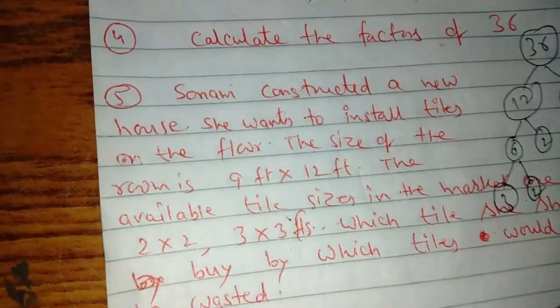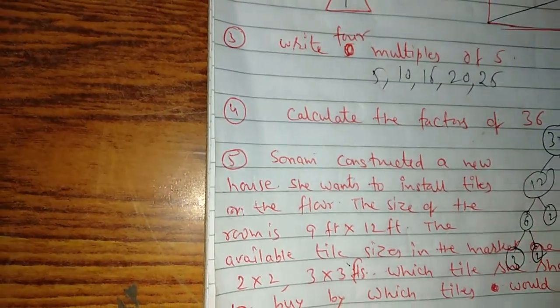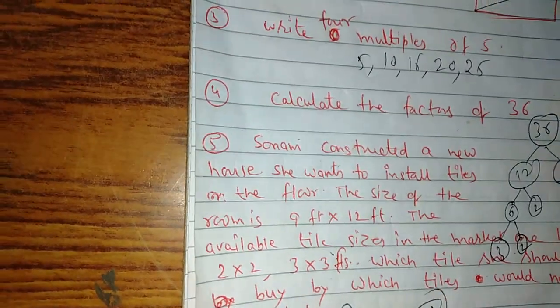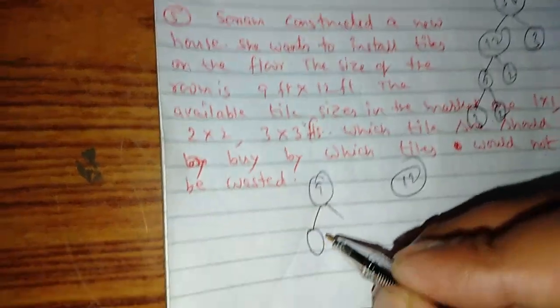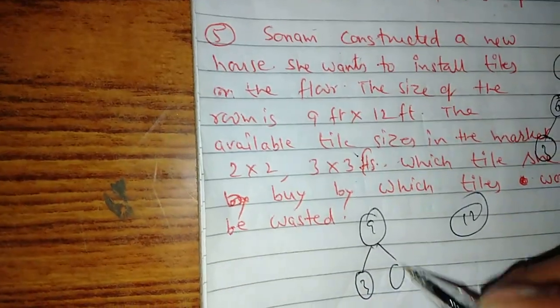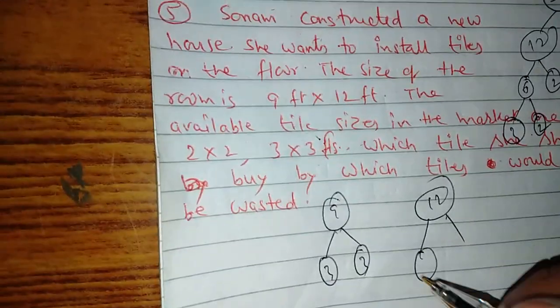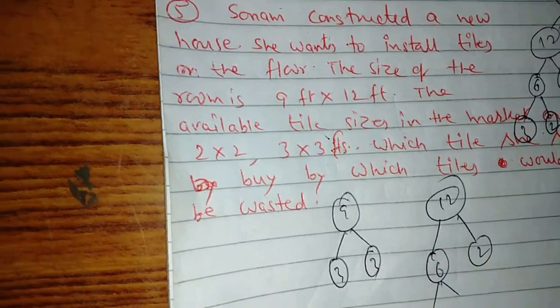Factor. What should we do? 9 and 12. 9 and 12. 3 and 2. 3 and 3. 6 and 9. 2 and 3.